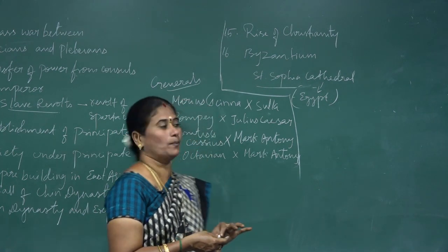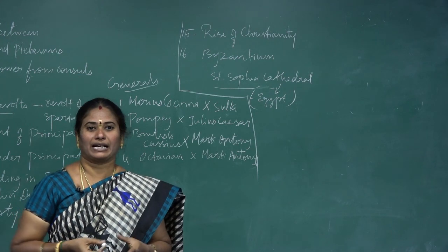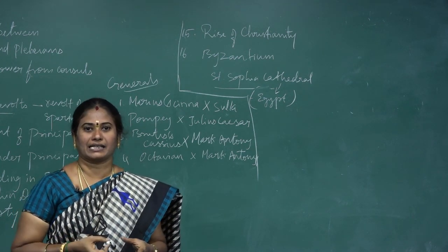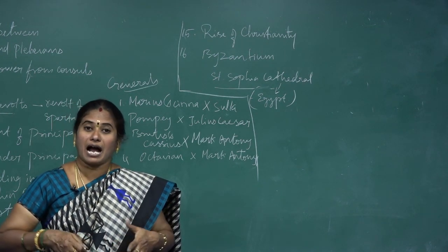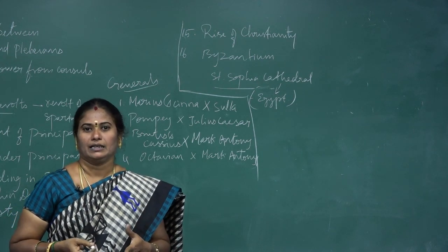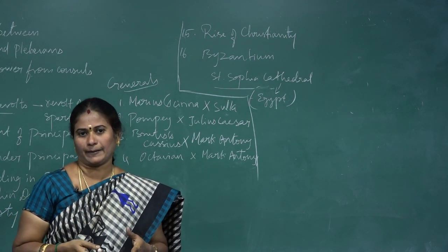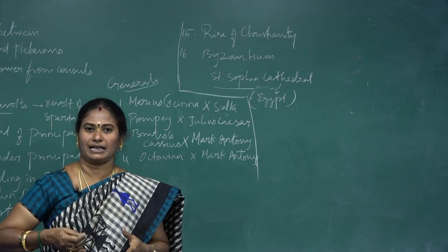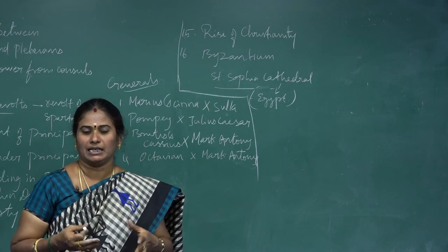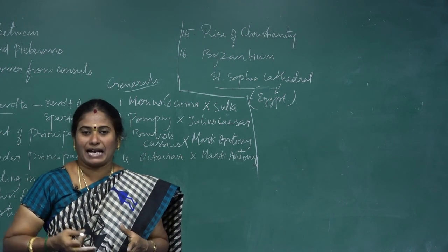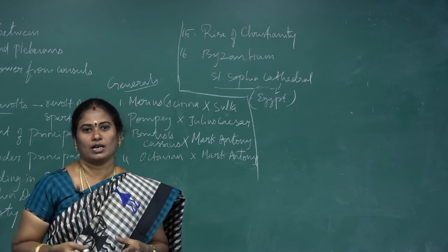Lastly, I will tell about Byzantium. The Byzantine emperors, who ruled Constantinople for about 1,000 years, called themselves Romans. The official language was Greek. Constantinople was built with luxurious royal palaces, libraries, scholars, and the fascinating Saint Sophia Cathedral.